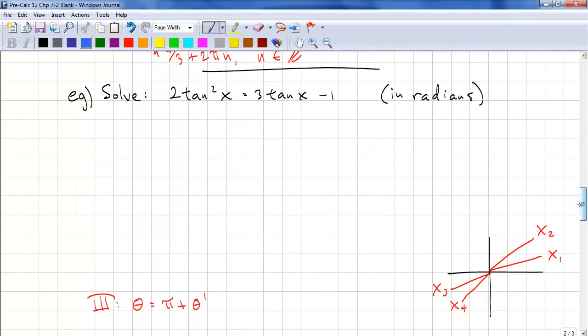Next problem. 2 tan x squared equals 3 tan x minus 1. This is where you'll want to use substitution. We'll let y equal to tan x. So we have 2 y squared equals 3 y minus 1. Don't try to do too many steps at once. Now we move everything to one side. We have 2 y squared minus 3 y plus 1 equals 0. Now we factor this. 2 y minus 1 and y minus 1 equals 0.